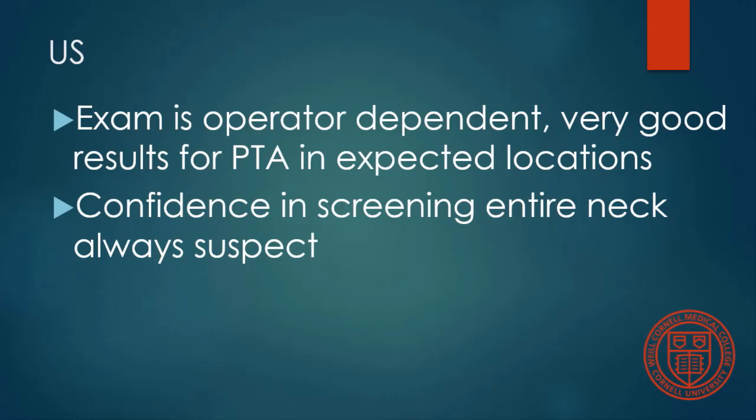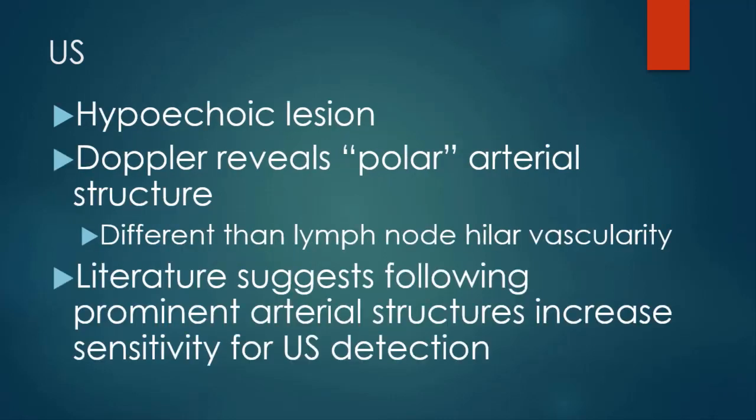Ultrasound has been used for a long time, including early on at the NIH. As is true of ultrasound, it is operator dependent. Parathyroid adenomas in expected locations are easily seen by ultrasound, but screening the entire neck and looking for ectopic lesions can be suspect. The lesions are hypoechoic. Turn on the Doppler, and you see that circumscribing polar arterial structure, which is very different from the vascularity of lymph nodes. The literature also suggests that following arterial structures in the neck to their endpoint can help find parathyroid adenomas.